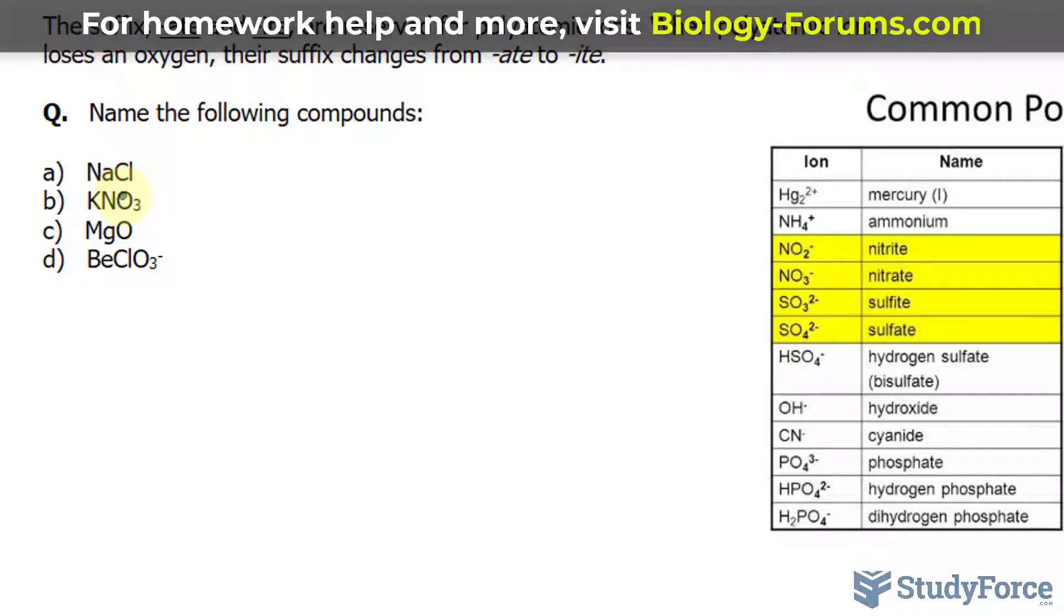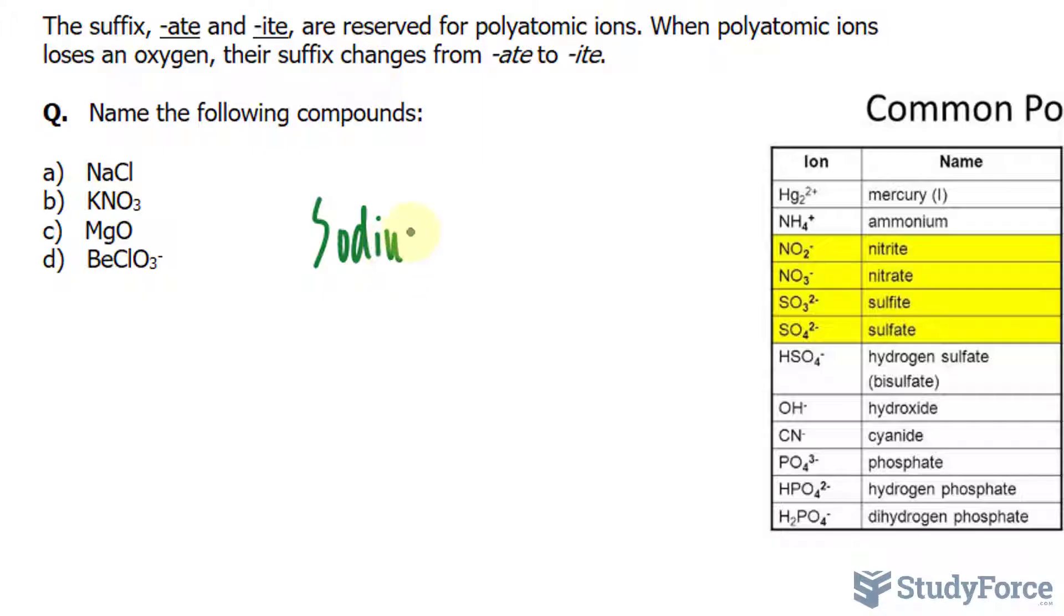Since we're not dealing with polyatomic ions here, we would simply write this down as sodium chloride. We have sodium and chlorine, but instead of writing chlorine, we end it with -ide. It is a simple ionic compound.